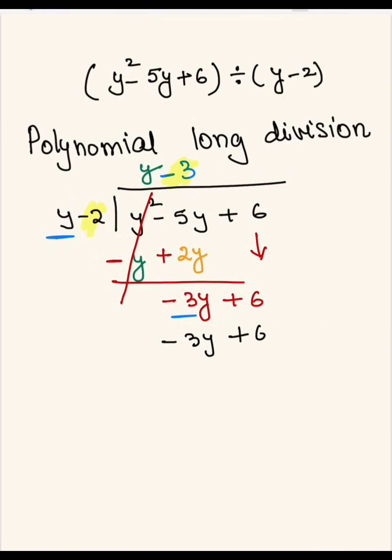And then we will multiply negative 2 with negative 3, which will give us positive 6. So you're going to go ahead and put down positive 6.